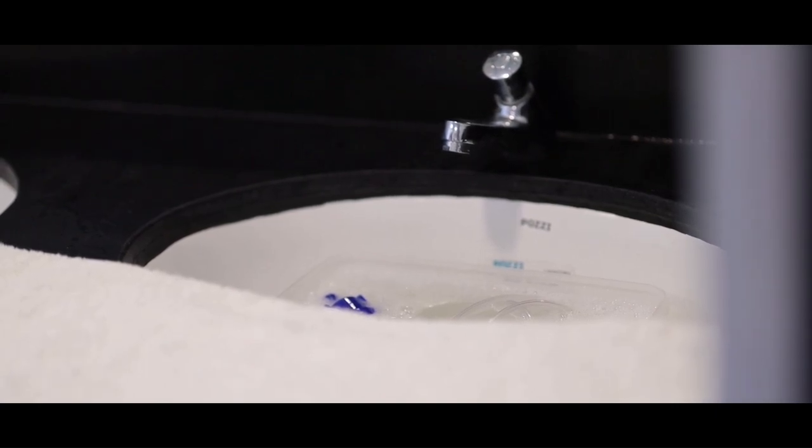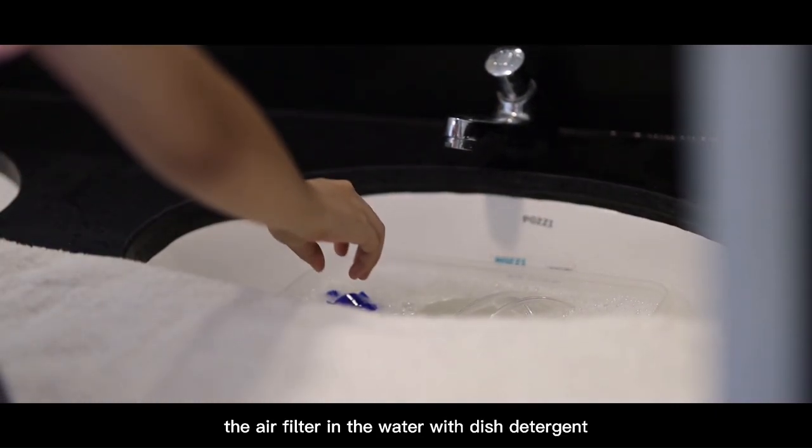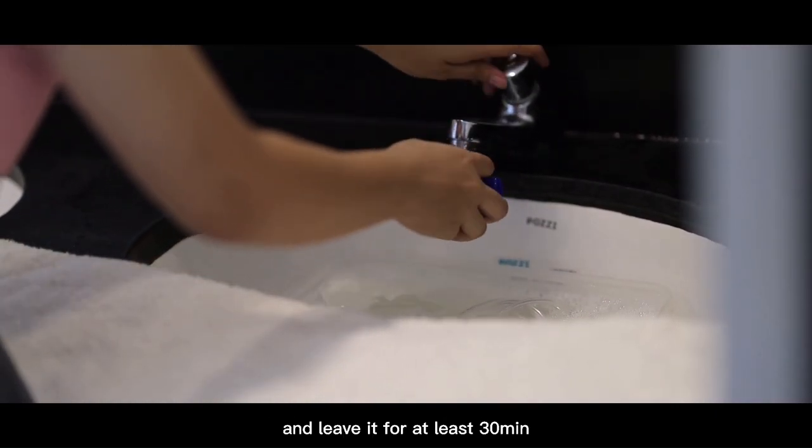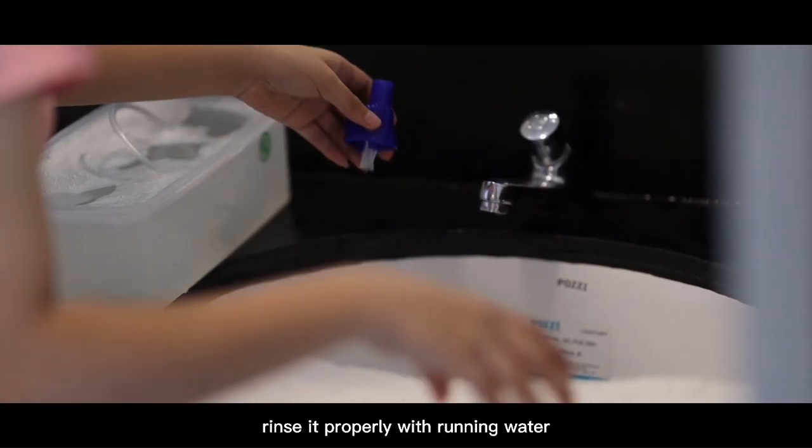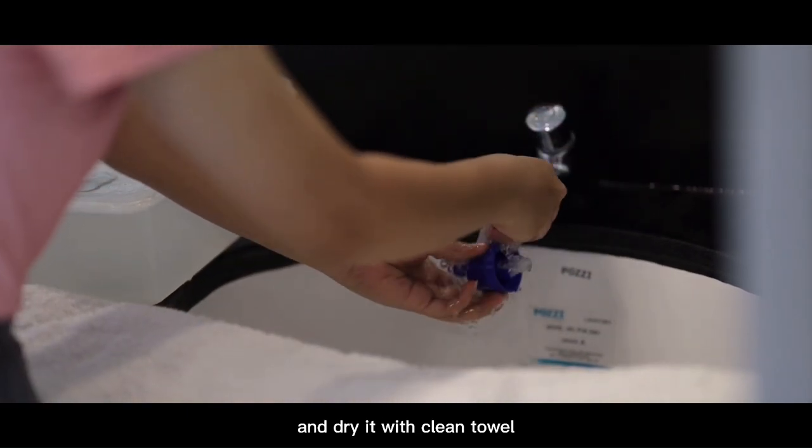For maintenance and care, put the air filter in water with dish detergent and leave it for at least 30 minutes to kill the bacteria. Rinse it properly with running water and dry it with a clean towel.